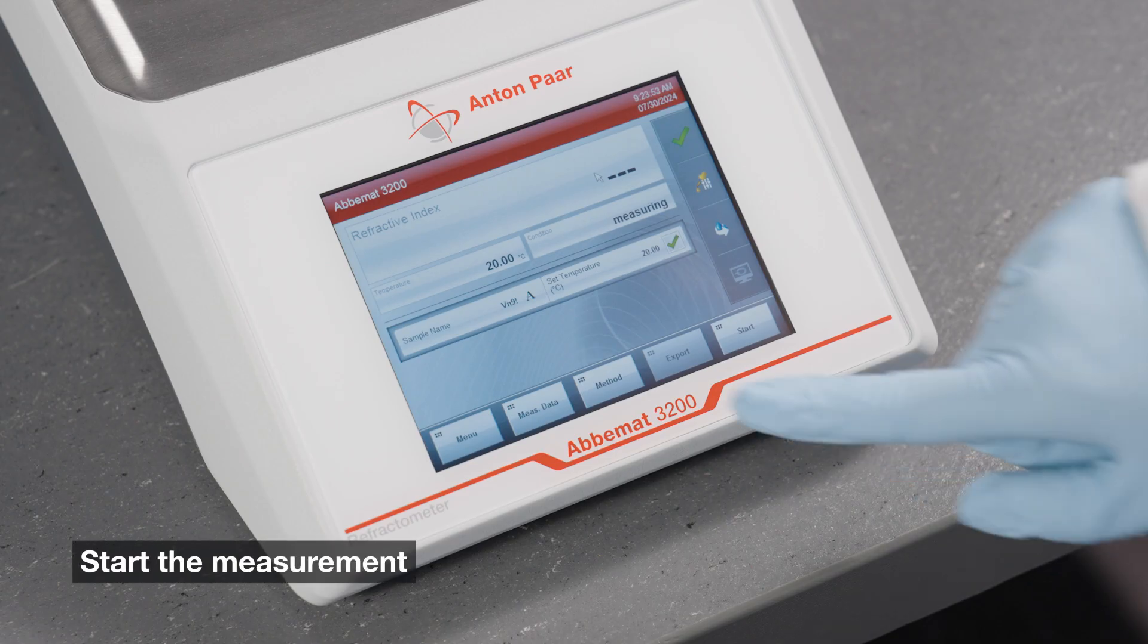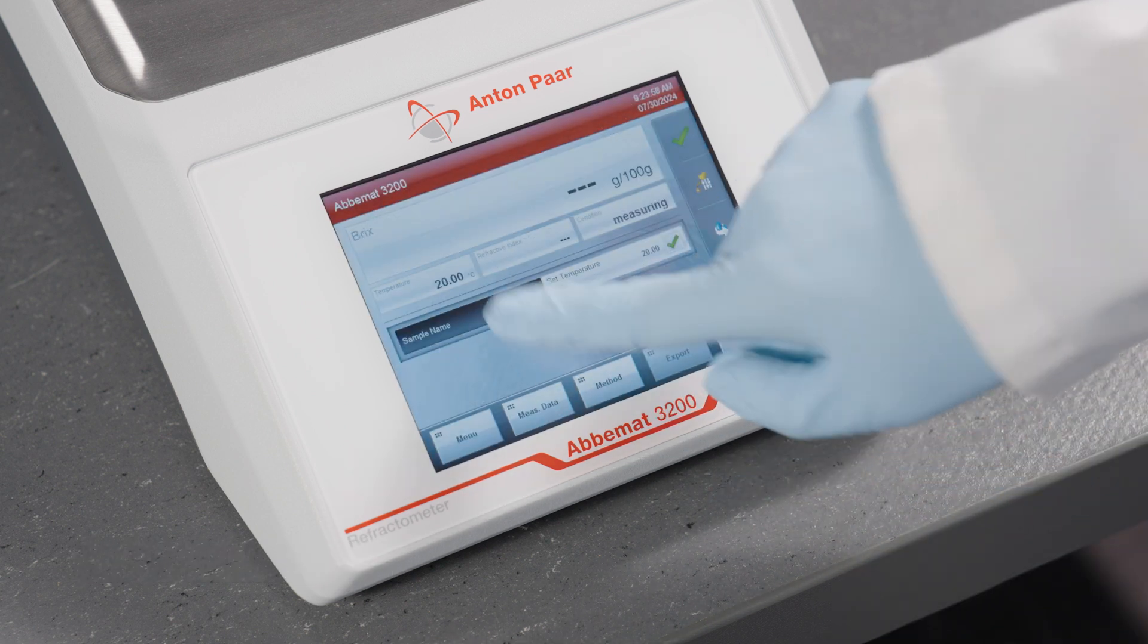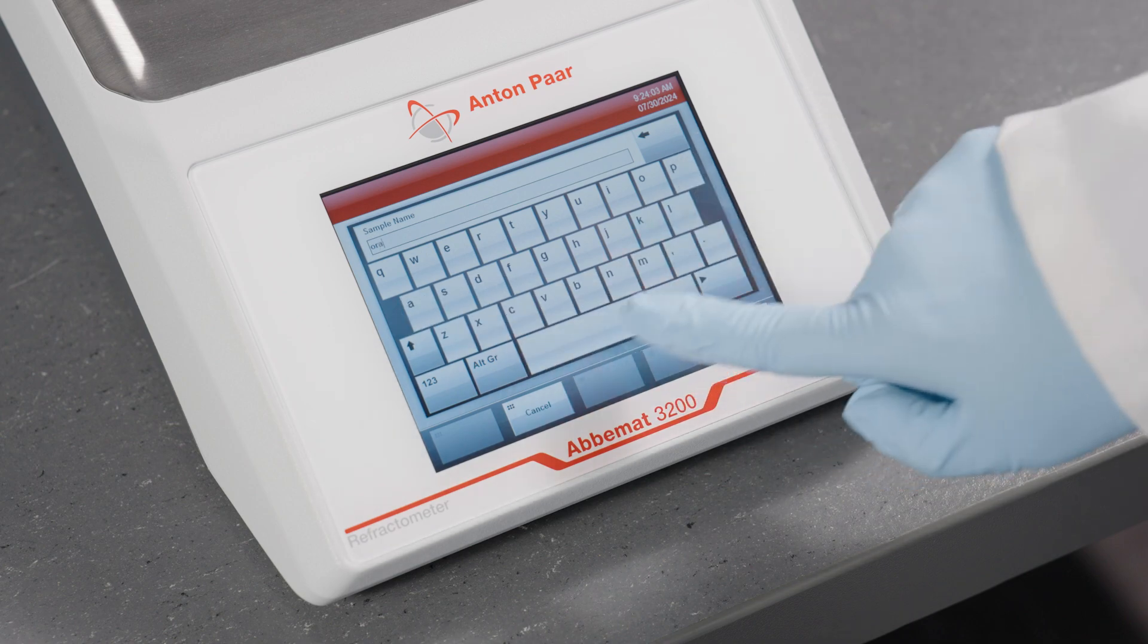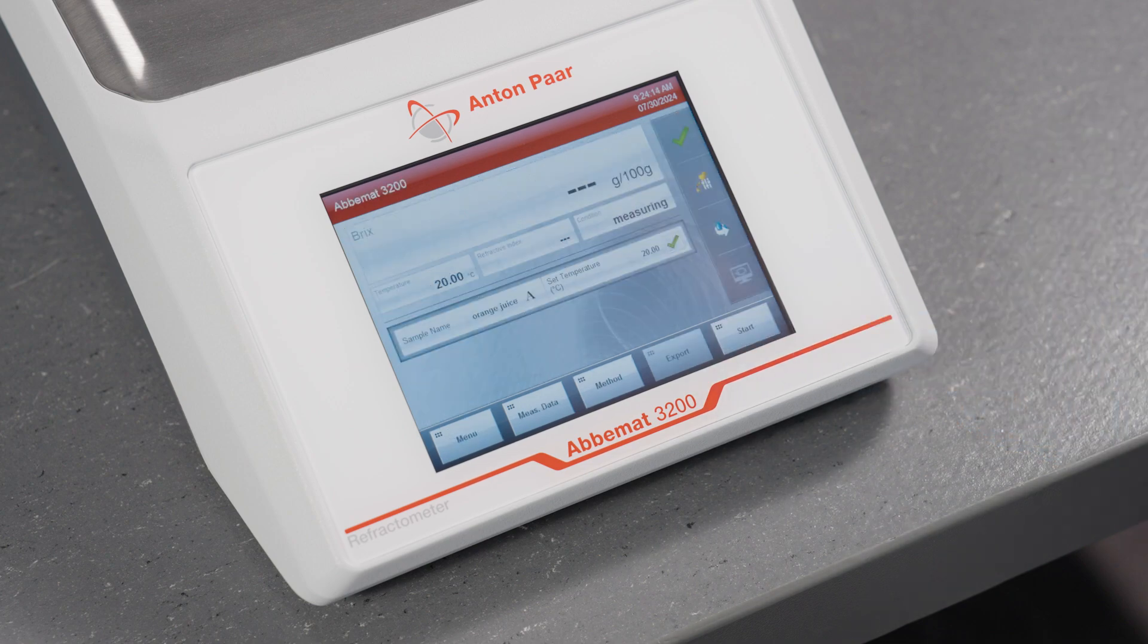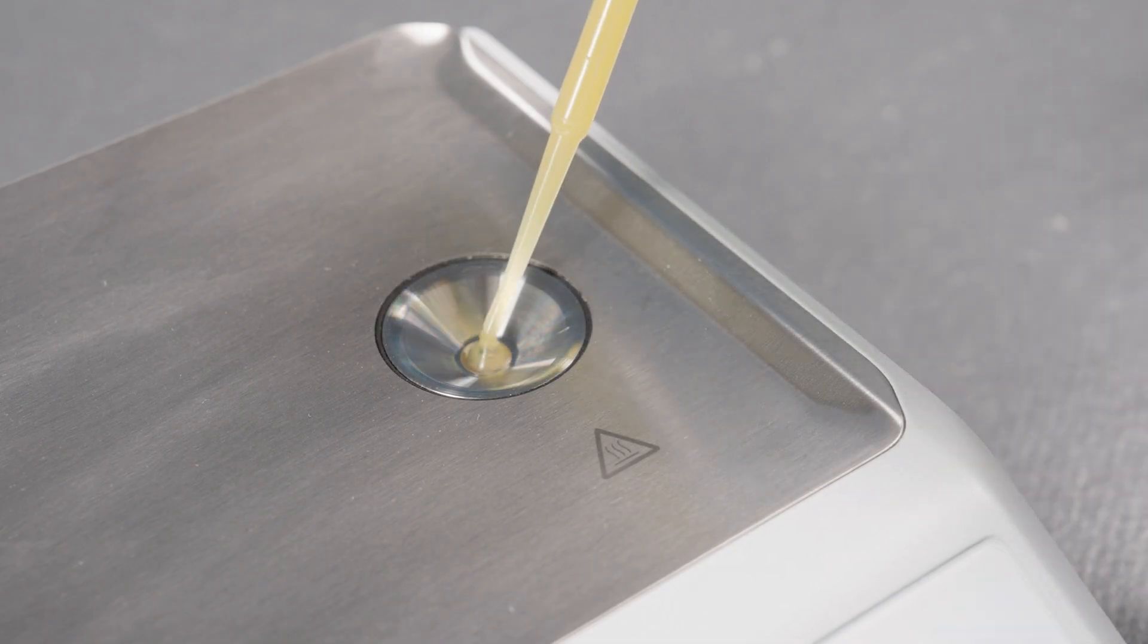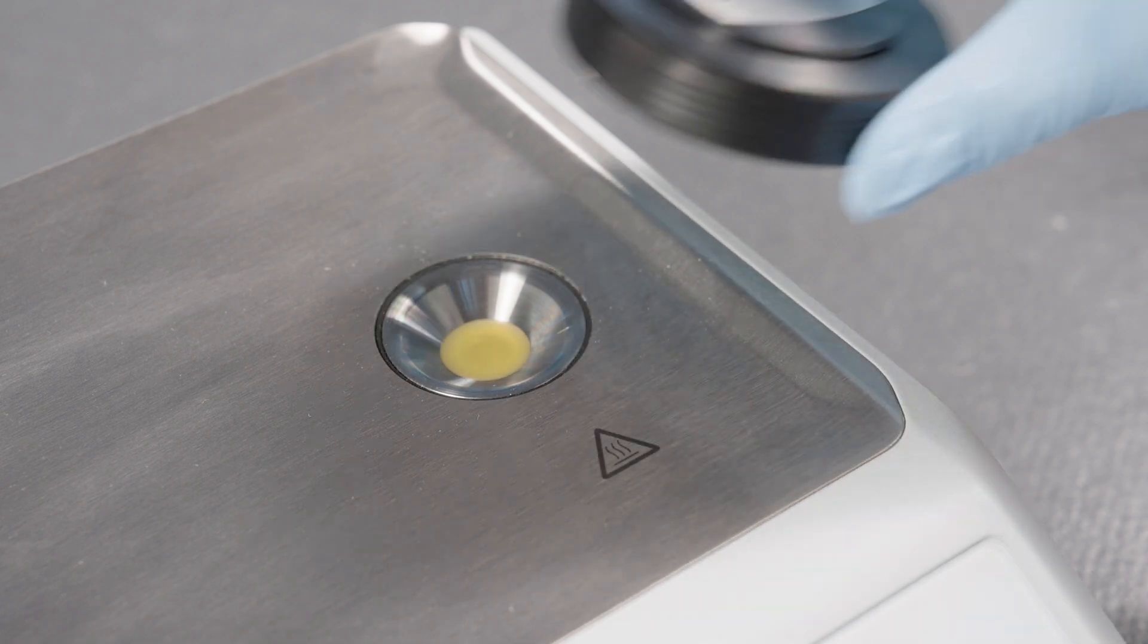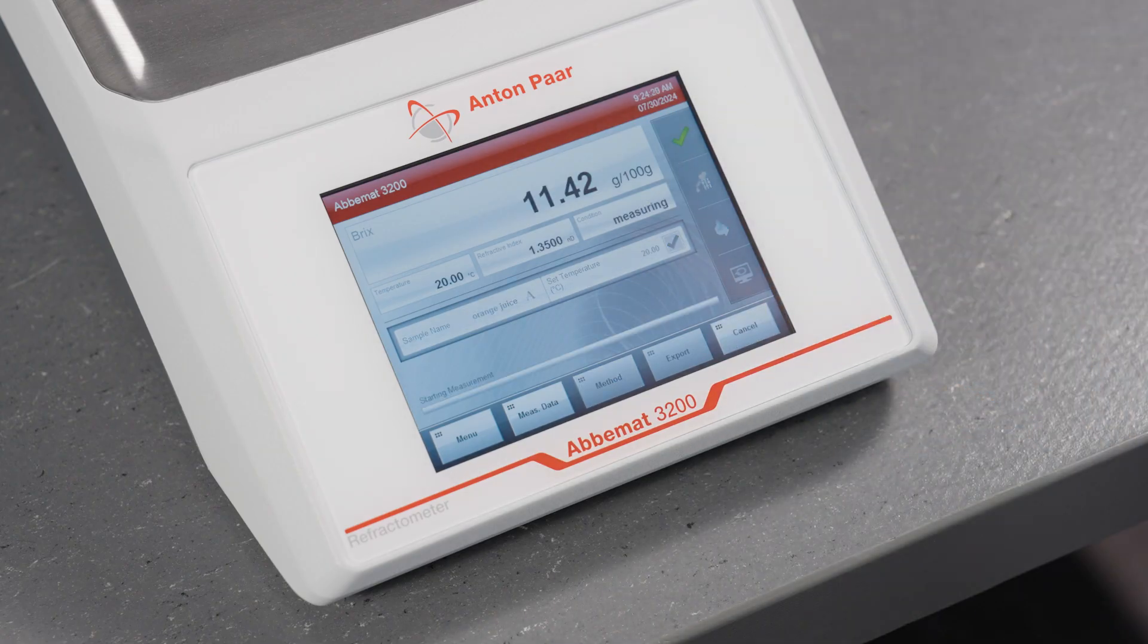Select the desired method by tapping Method on the main screen. Enter a sample name and apply the sample. Press start and wait until the measurement is finished.